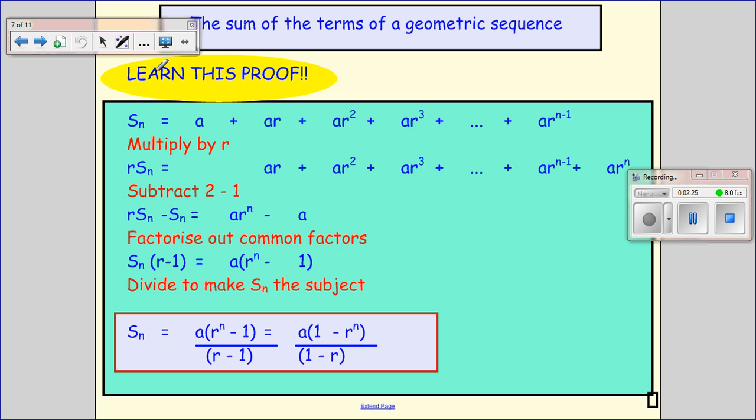Okay, so if I have a sum to n of a series, and this is the general formula for the series, and I multiply it by r, so I multiply each term by r, so a times r, and I'm putting them just underneath the term ahead just so it's easier when I do this stage.